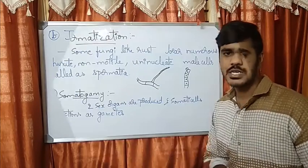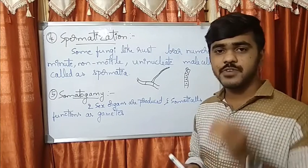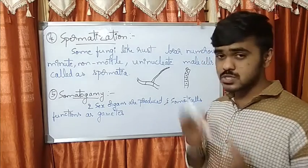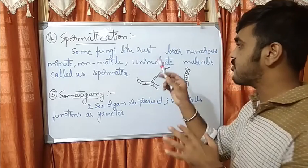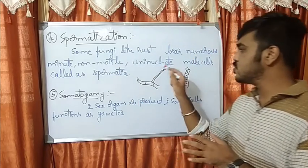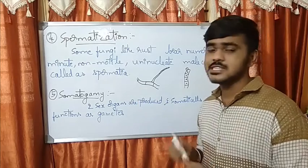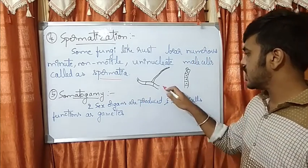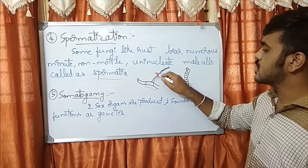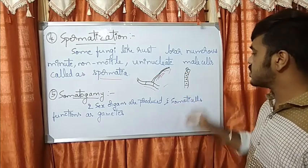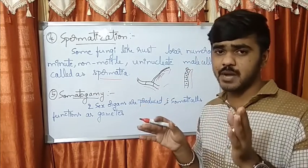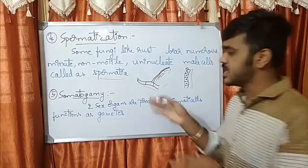Next comes spermatization. Whenever you observe a disease like rust, you can see very minute structures — those are usually spermatia. In fungi like rust, numerous minute non-motile uninucleate male cells are formed — they are called spermatia. A normal hypha is formed and later the hyphal cells turn into spermatia. This usually takes place in the pycnia.